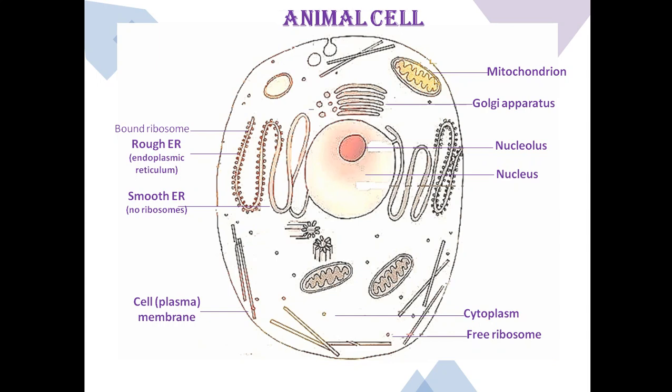Next are Golgi vesicles. These are often called the traffic police of the cells. They play an important role in sorting many of the cell proteins and directing them to their destinations. These are formed by budding from the Golgi bodies.